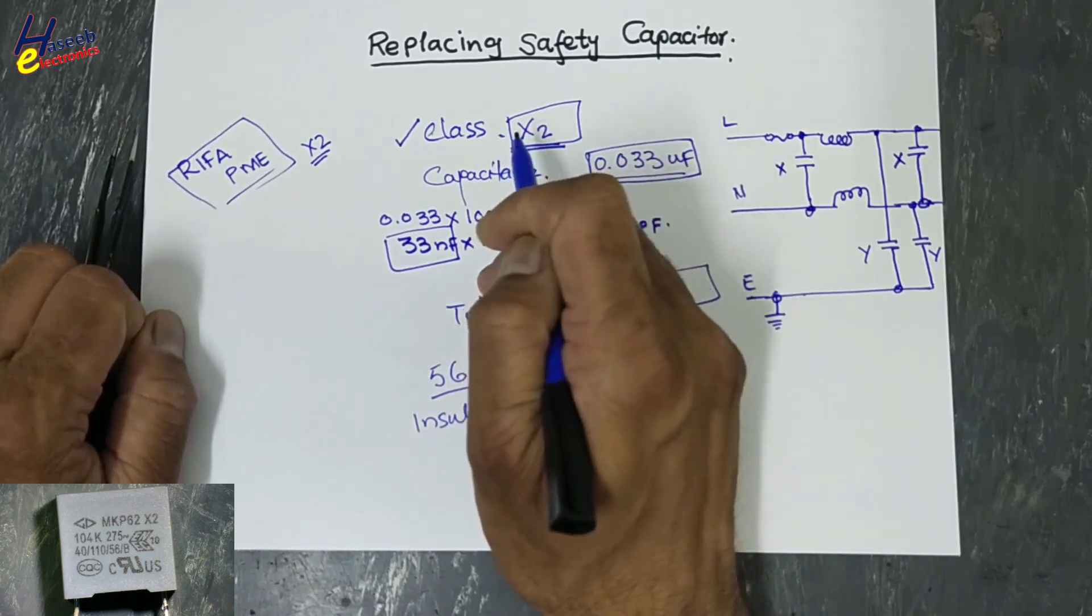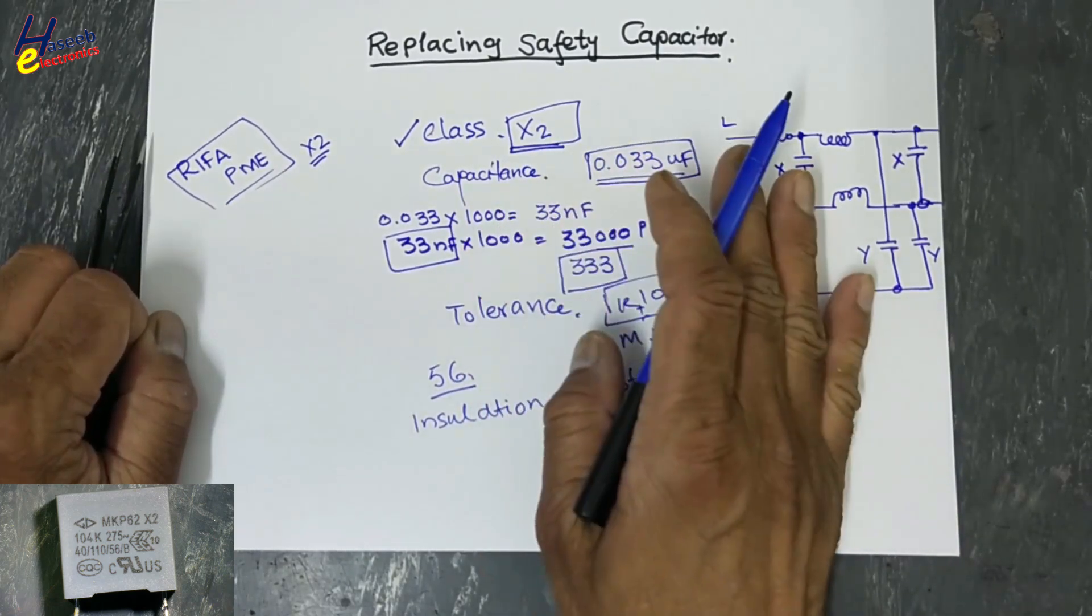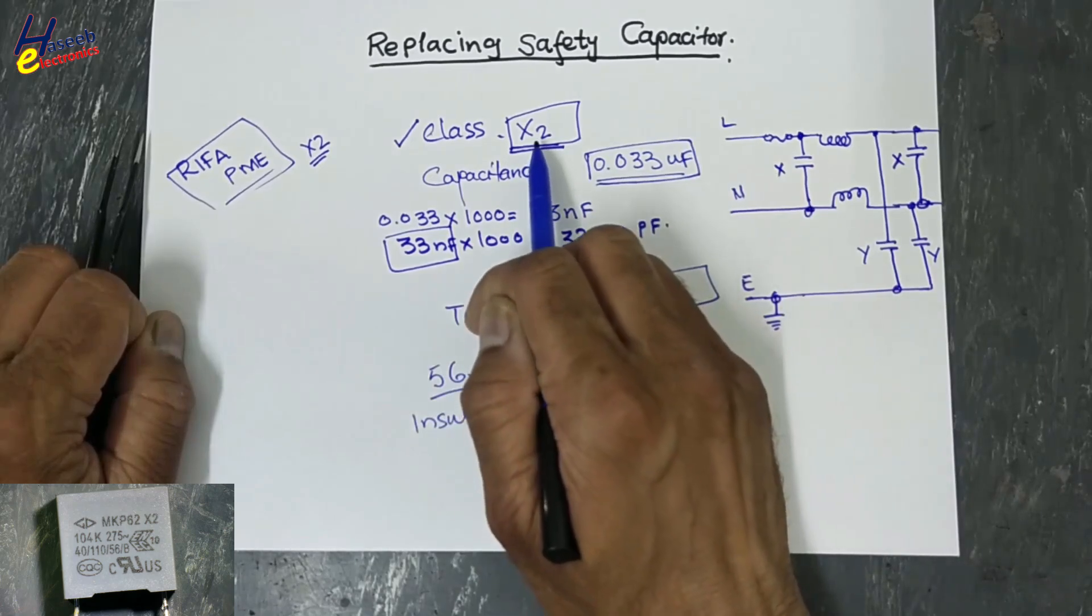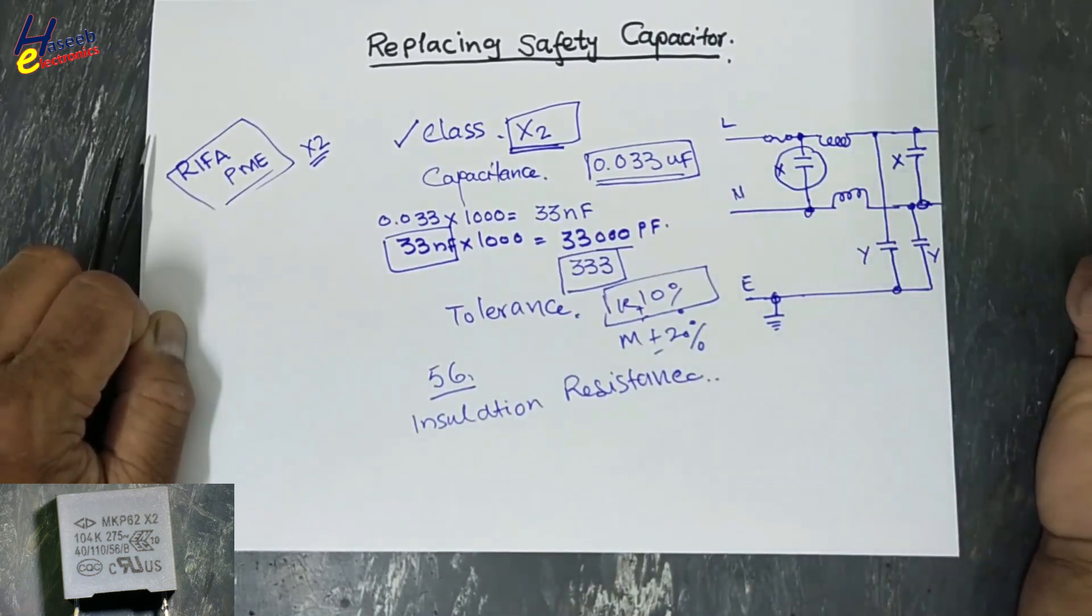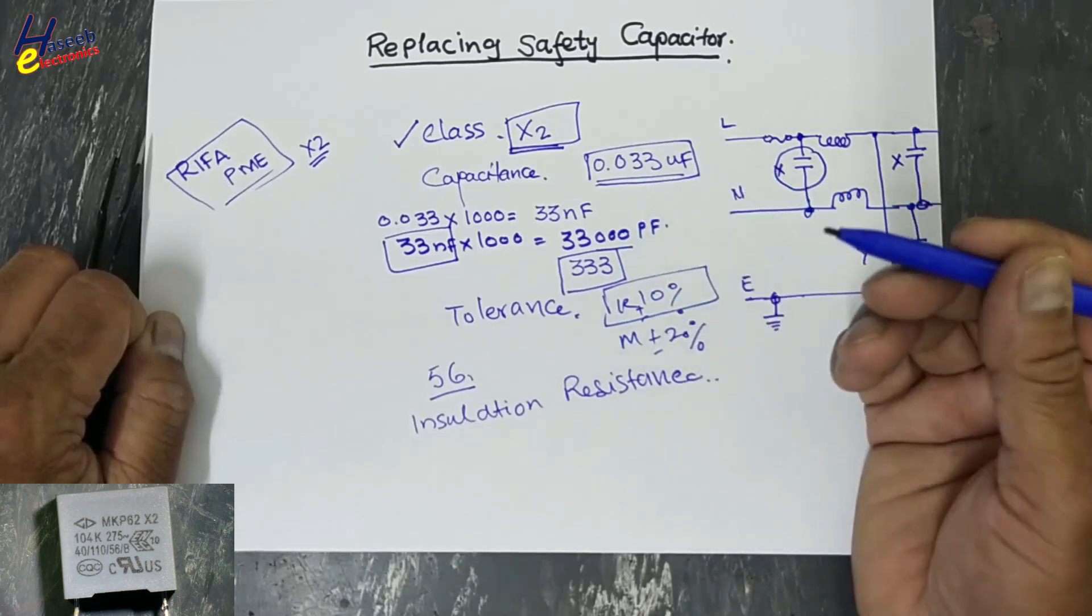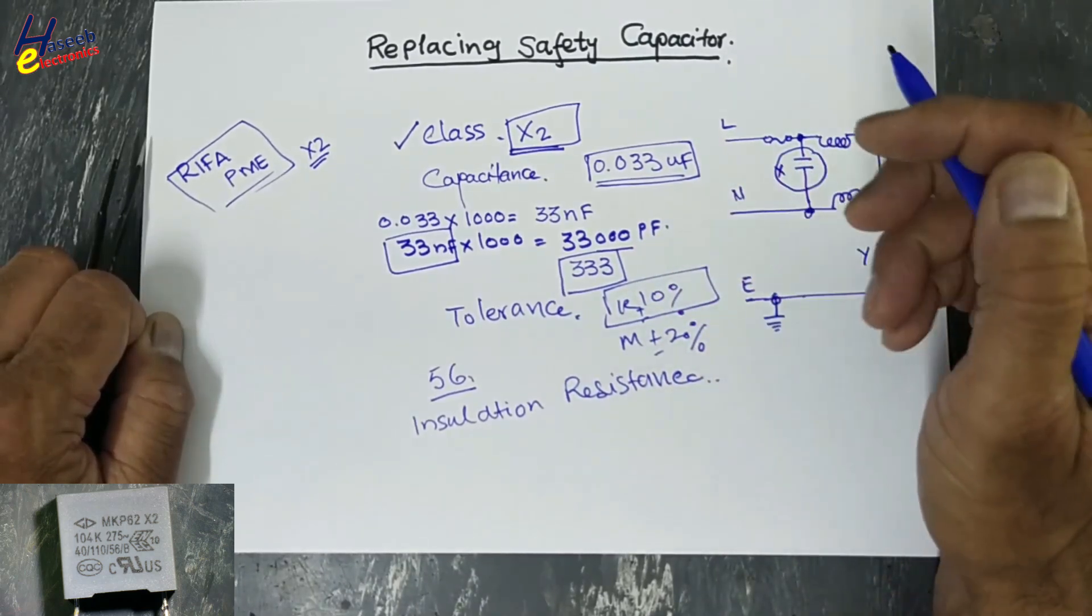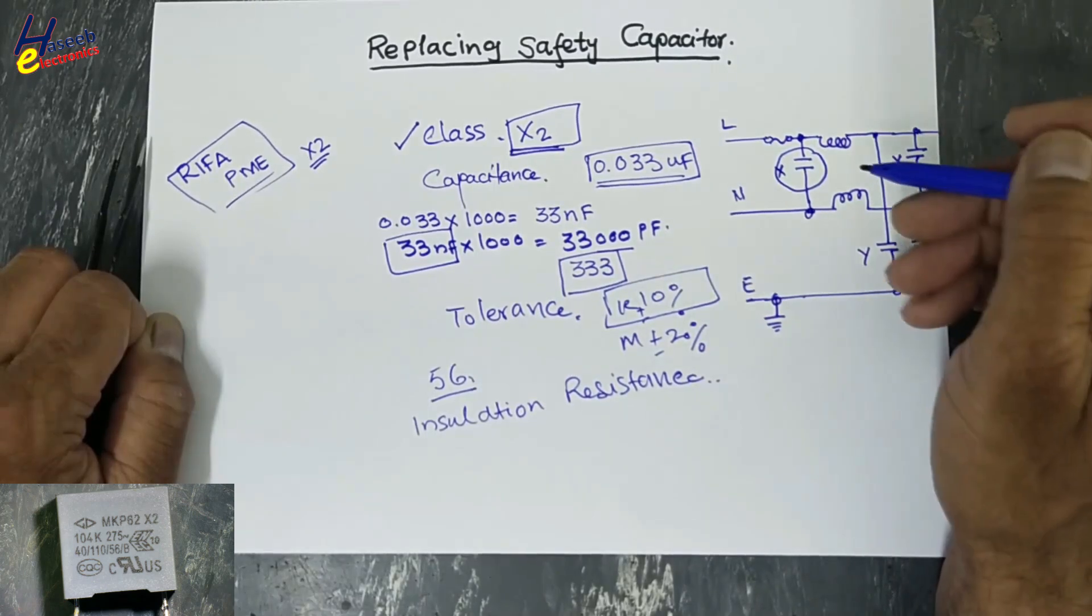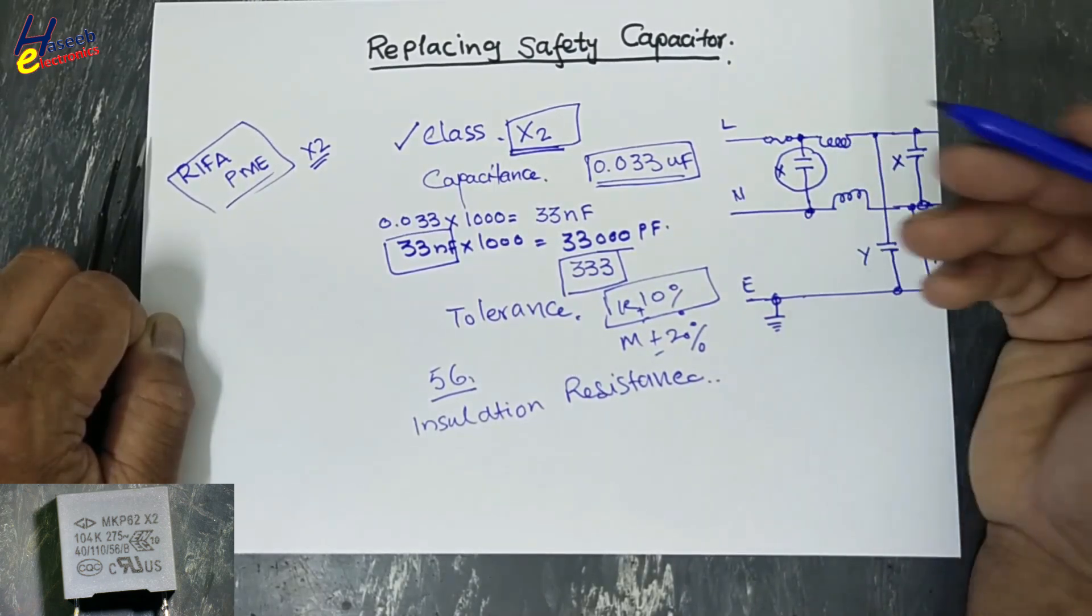We will not select X1 or X3 or Y grade capacitors. We will use the same category that is the original capacitor. Second thing: capacitance. Third thing: tolerance. If you will use any other value capacitor than the rated capacitor, it will change the corner frequency of this tank circuit.